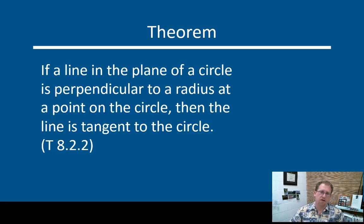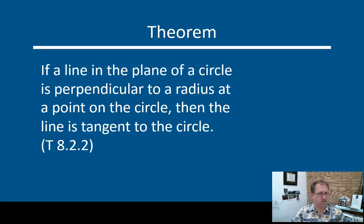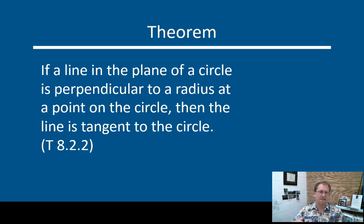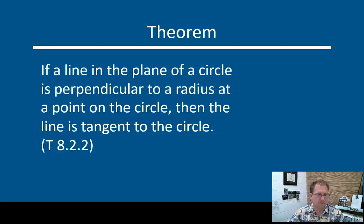You can use that property to prove if a line is in fact a tangent. If you have a radius intersecting a line, and that line touches the circle such that the line is at a 90-degree angle to the radius, then that line is a tangent. If it intersects a radius on a point of a circle at a 90-degree angle, then you have a tangent line — it has to be a tangent; it can't be any other relationship.